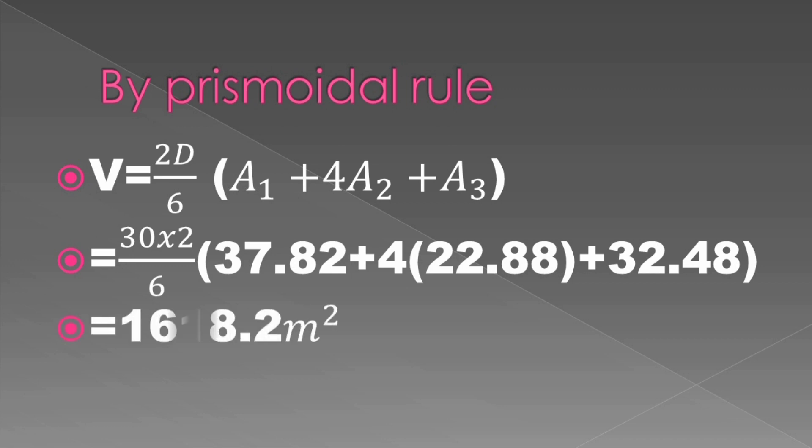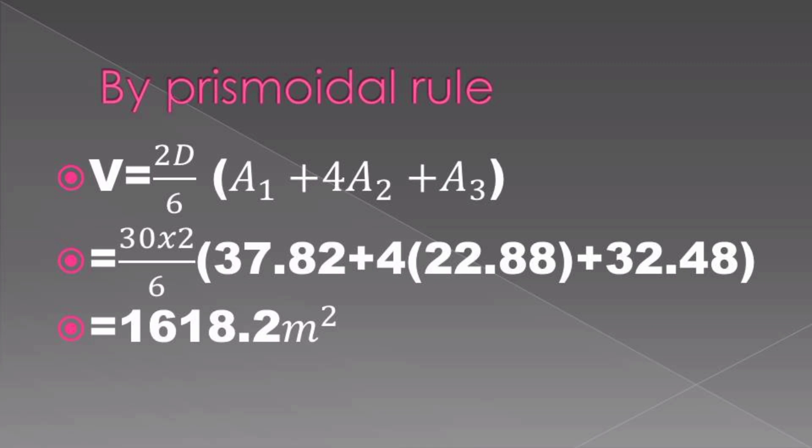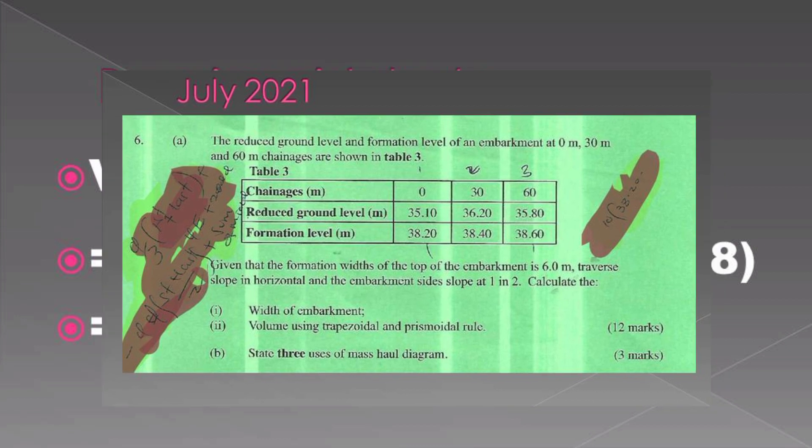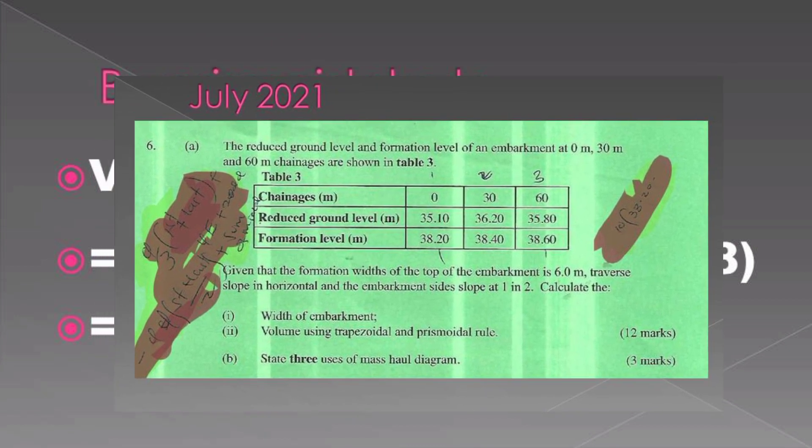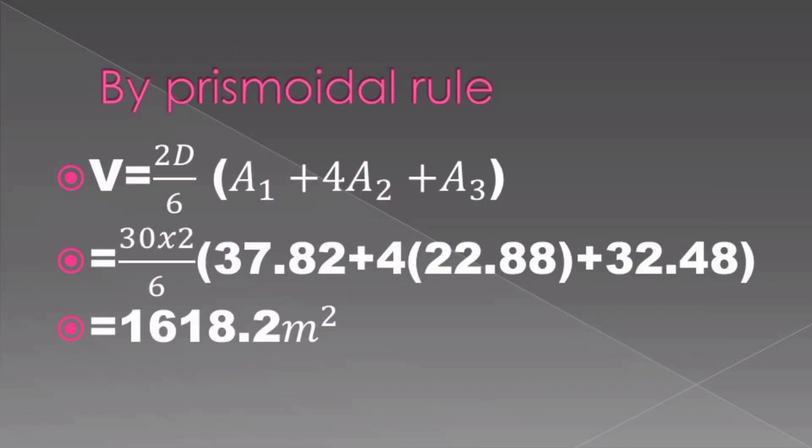The formula for finding the volume by prismoidal will be V = (2D/6) × (A₁ + 4A₂ + A₃). Here, D will be the interval in the chainages, and our interval there was 30 as observed earlier. Having applied those, we have finished our question.